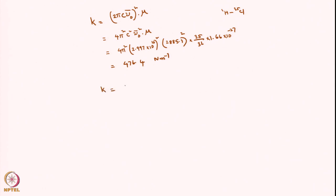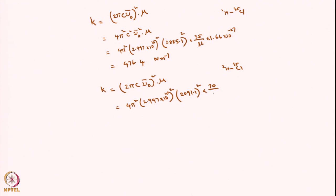Similarly, for D²Cl³⁵, k = 4π² × (2.997 × 10¹⁰)² × (2091.1)² × μ, where the reduced mass μ = (2 × 35)/(2 + 35) × 1.66 × 10⁻²⁷ = (70/37) × 1.66 × 10⁻²⁷ kg. Solving this gives a force constant of 486.4 N/m.